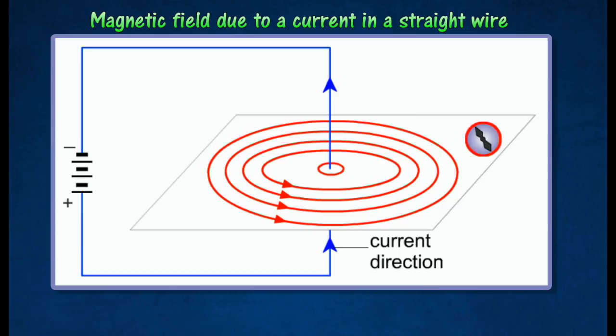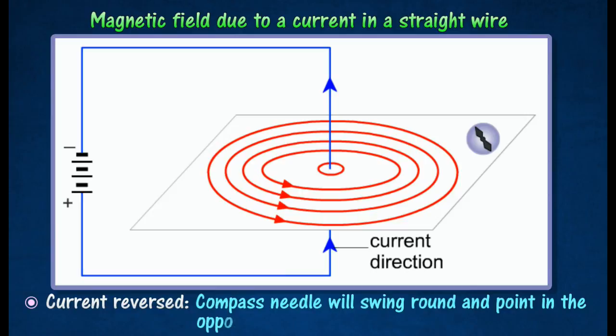A small plotting compass placed on the card indicates the direction of the magnetic field. If the current is reversed by changing the battery connections, the compass needle will swing round and point in the opposite direction. The magnetic field will remain unaltered.